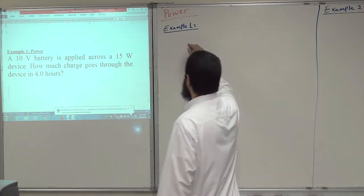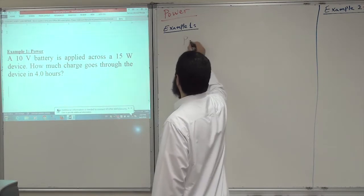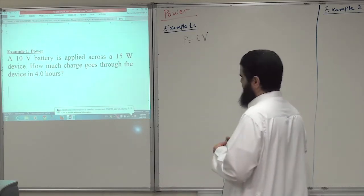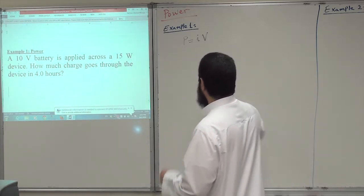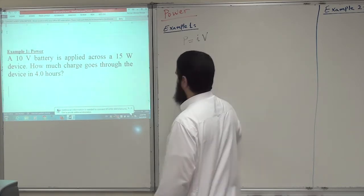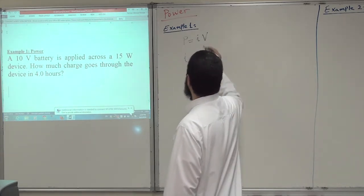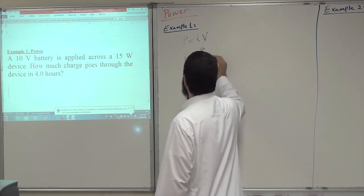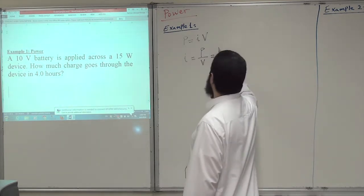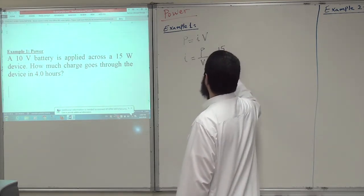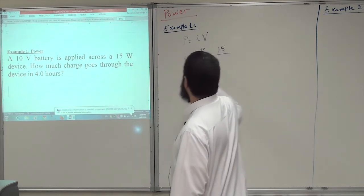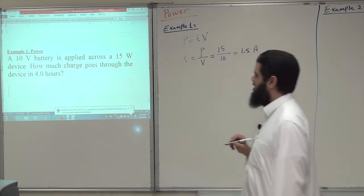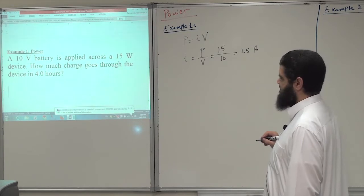So we can use the definition for power. Power equals IV, the current multiplied by the voltage across a device. From here we can get the current. Current equals power divided by voltage. The power in this question is 15 watts divided by 10 volts, so we'll end up with 1.5 amperes moving through our device.